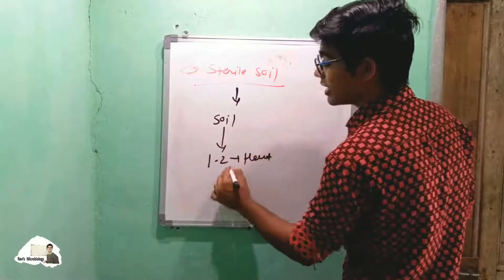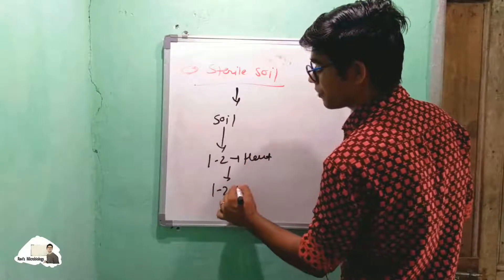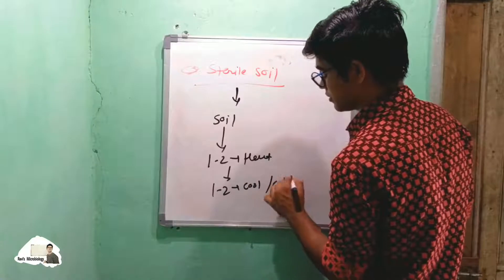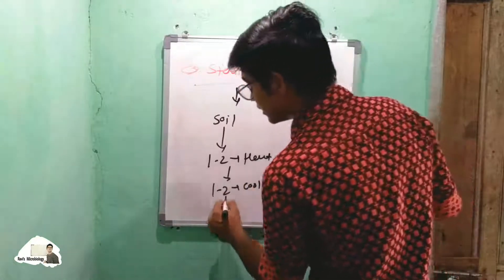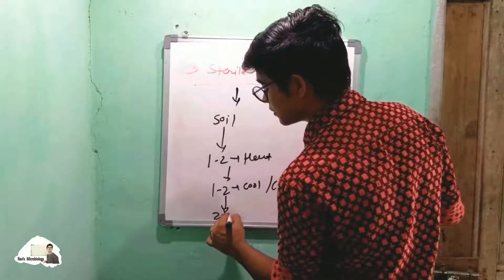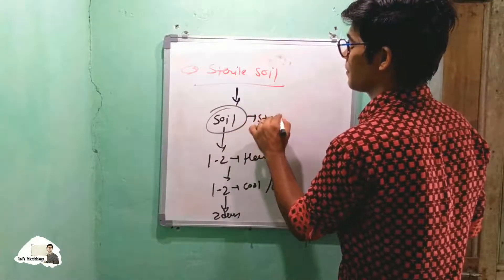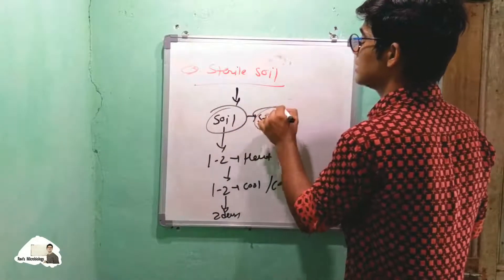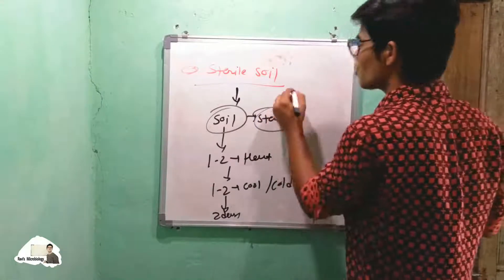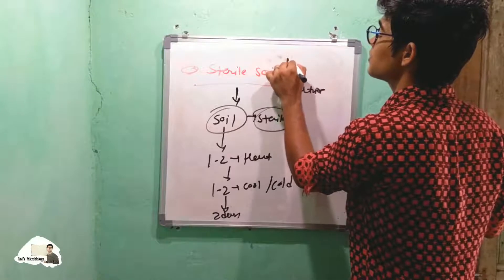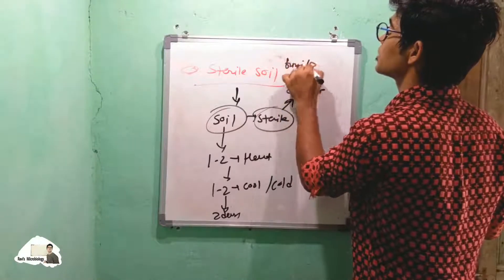Then in the next one or two hours, we cool it. This is done for two days. After two days, the soil is completely sterile. In this sterile soil, we add our culture, such as fungal spores or bacterial spores.